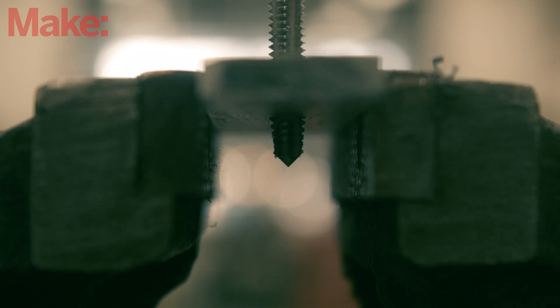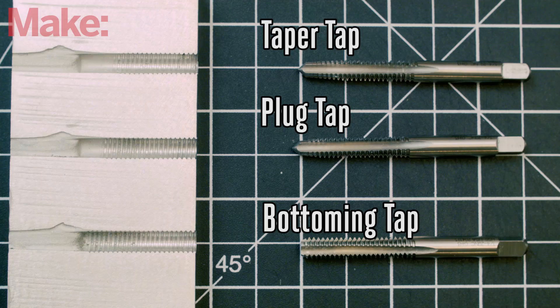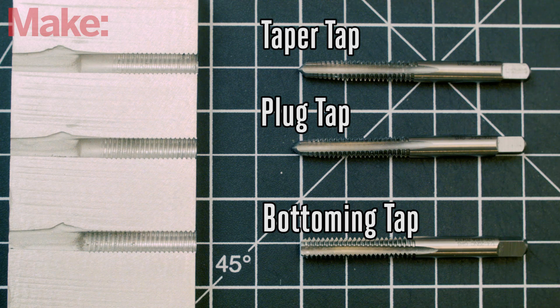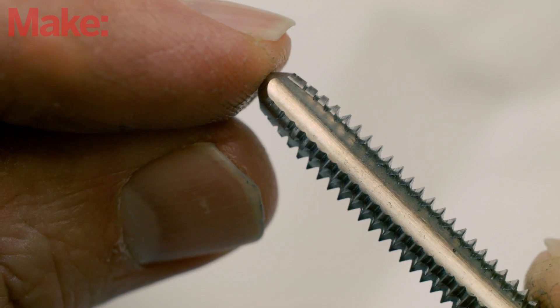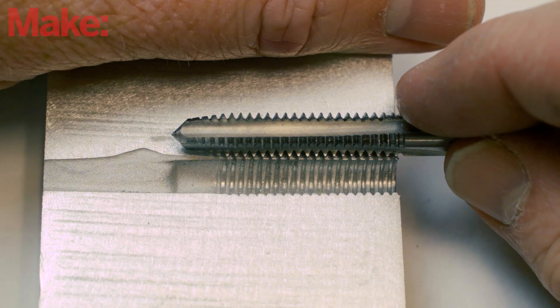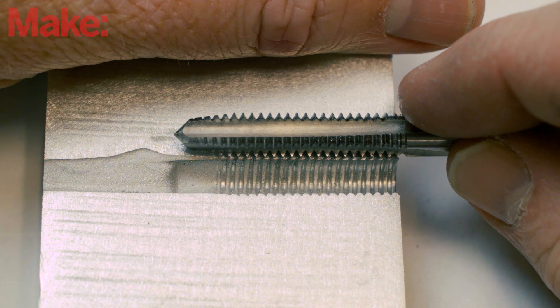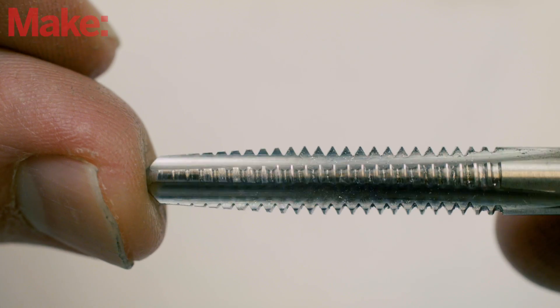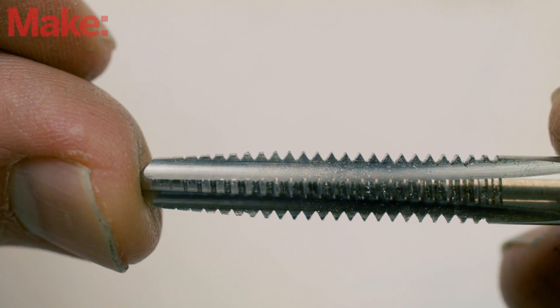Taps come in three main styles. Plug is the most common tap for general purposes. It has a slight taper but allows for threading almost to the bottom of a blind hole. Taper taps start narrow and then taper to a full thread width. This means it's fairly easy to start when threading into a hole, but they may need to be turned farther in order to form a fully threaded hole.